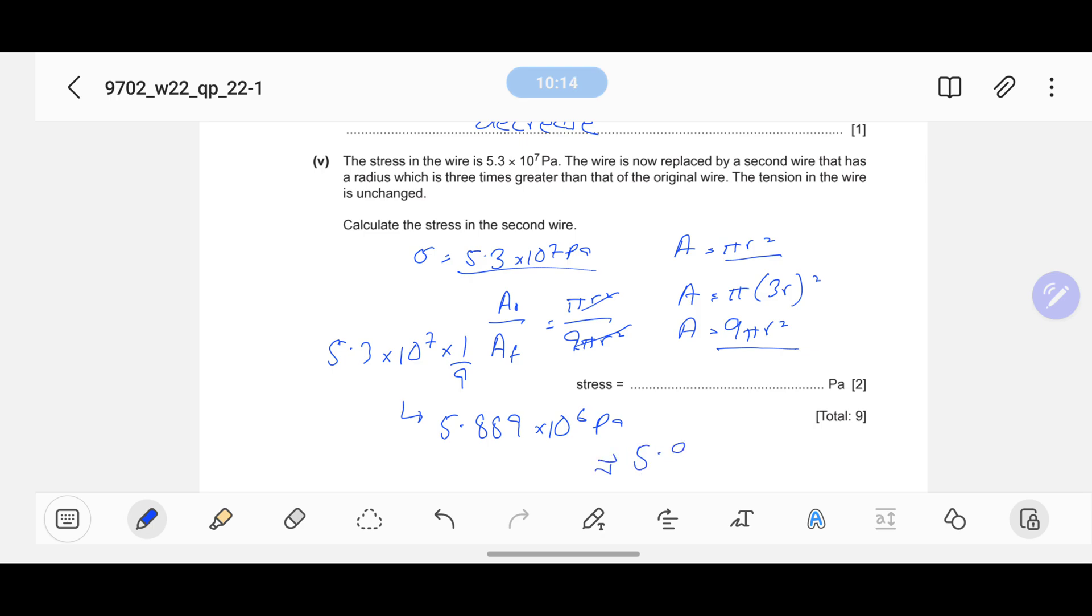That value is 5.889 × 10^6 Pascals, or you can round it off to 5.9 × 10^6 Pascals. This is your new stress that will be a reduced stress because right now my area has been increased because of the greater radius, so my stress will decrease.